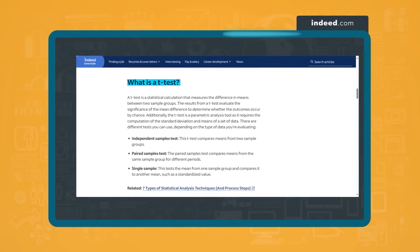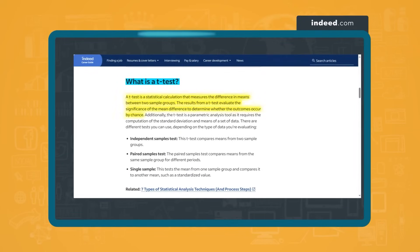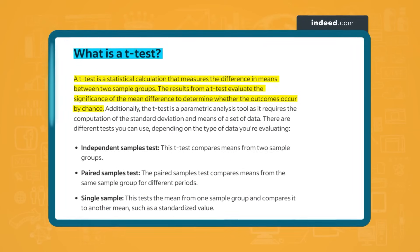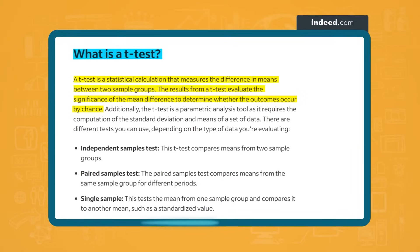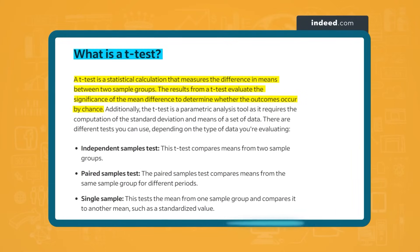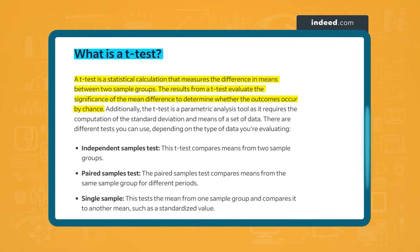A T-test is a statistical test that uses the T family of distributions to compare two means to see if they're significantly different from each other, and they're typically conducted when the population standard deviation is unknown. Generally, these questions are going to be more definition-based — you'll just have to remember these, especially if you're expected to have a broader and fundamental statistical analysis background.